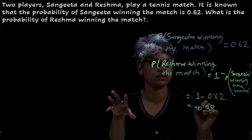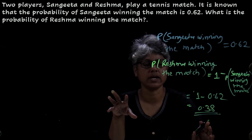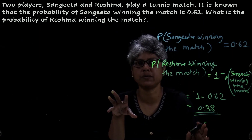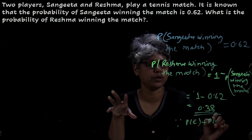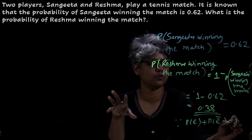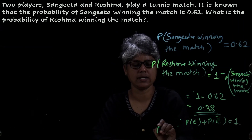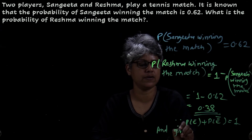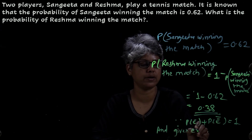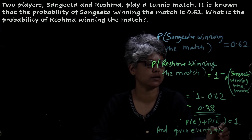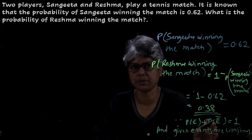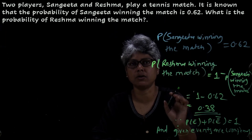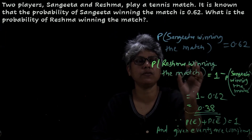That will be 0.38. So 0.38 is the probability of Reshma winning the match. Why? Since P(E) + P(E̅) = 1 and the given events are complementary, we can find the probability of Reshma winning the match.